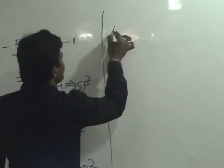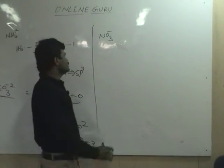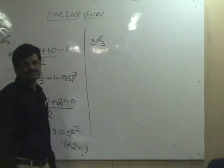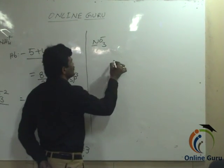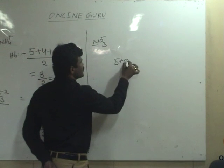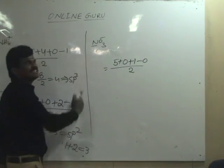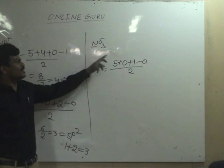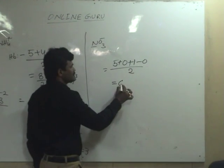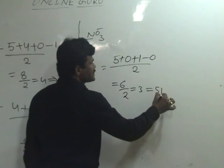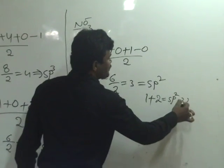In the same way, for NO3 minus ion — the nitrate ion — nitrogen is the central atom. Hybridization of nitrogen equals five plus zero plus one minus zero, divided by two. Here five is the valency electrons of nitrogen, zero is for divalent oxygen, and one is the anion charge. That equals six by two, equals three. Three means sp2 hybridization — intermixing of one s orbital and two p orbitals produces sp2 hybrid orbitals.